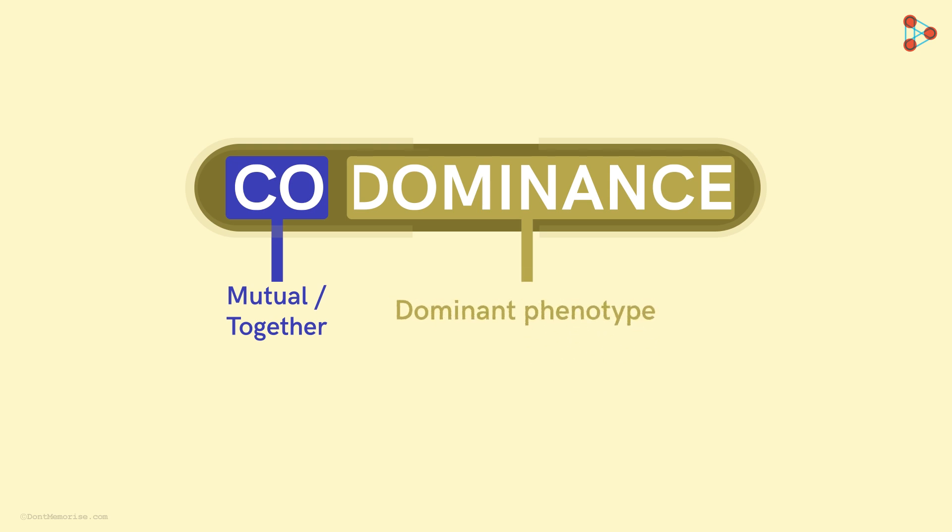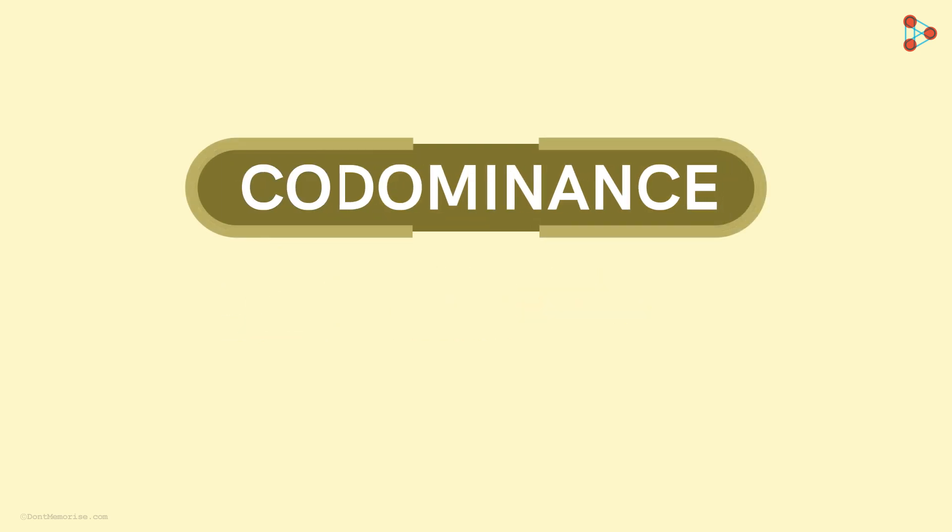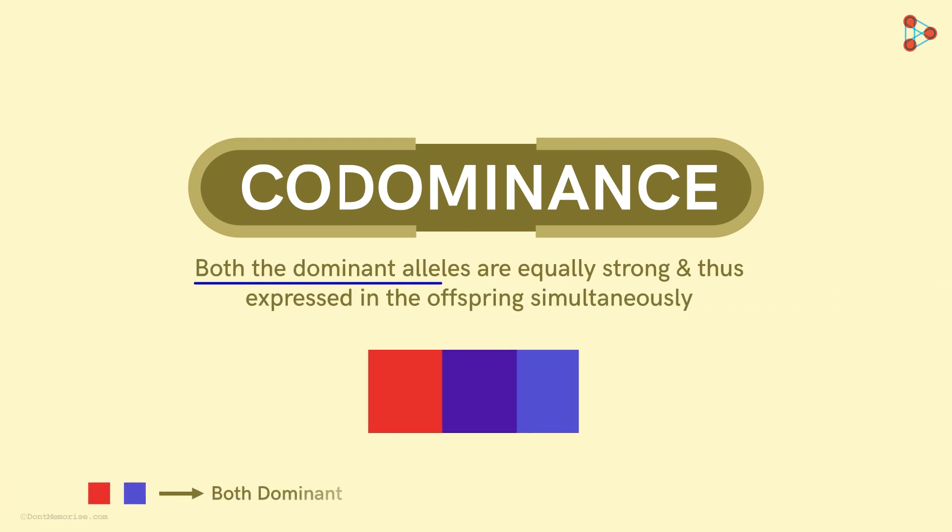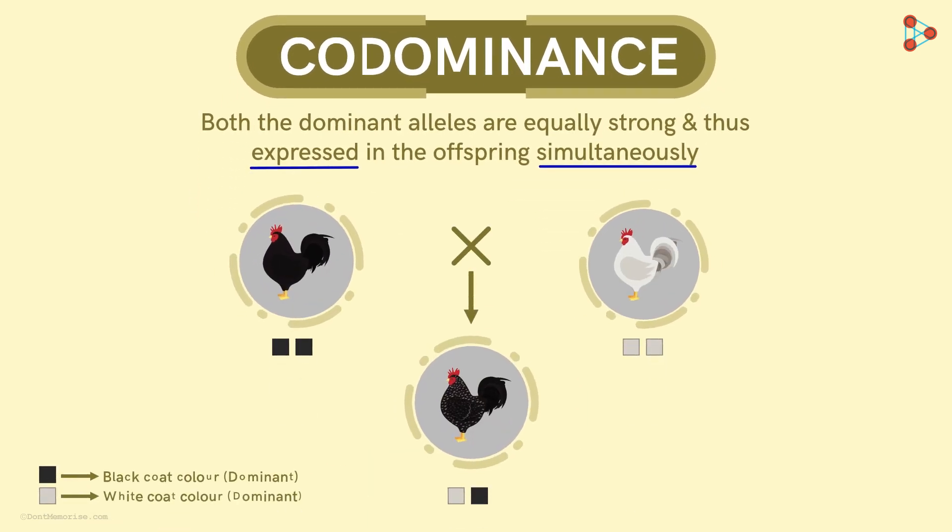Now the question is, how do the two terms co and dominance come together to give us the effect? And what type of effect is exactly seen in the organisms? Co-dominance is the phenomenon where both the dominant alleles are equally strong and thus expressed in the offspring simultaneously. So the offspring will be heterozygous and will have both dominant genes in the genotype. As a result, the effect of both the alleles will be seen in the organism phenotypically.